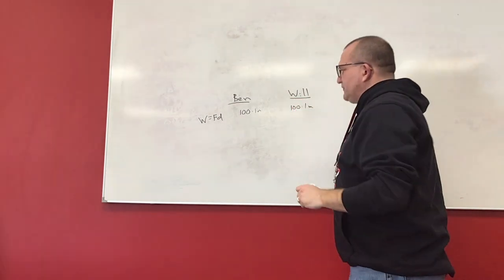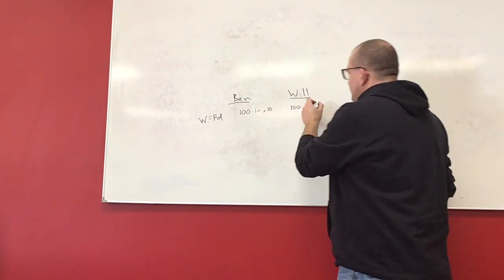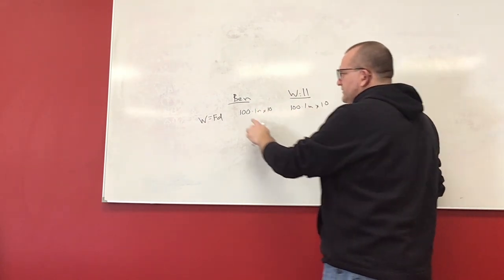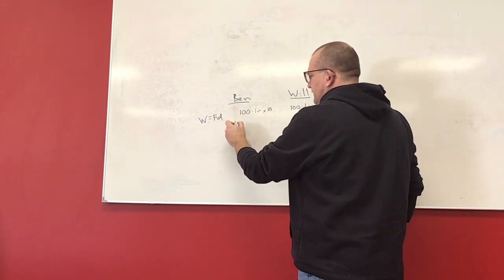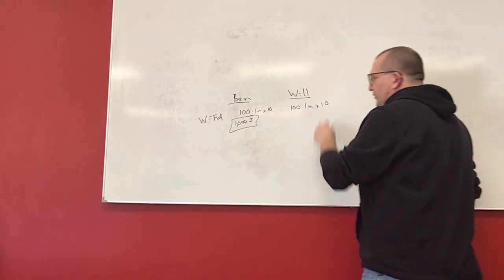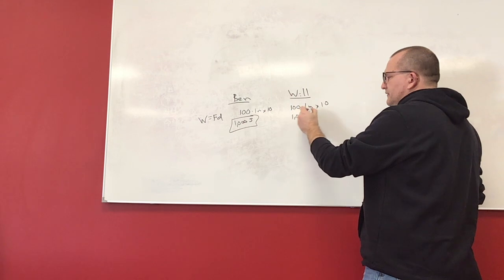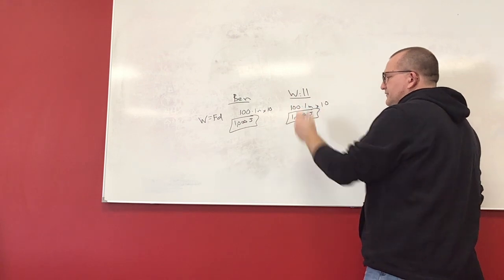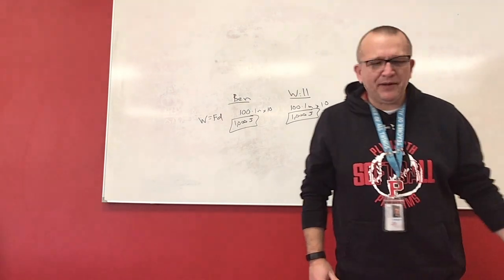He's lifting 100 pounds to one meter, but you're doing it ten times, so we're going to multiply both sides by ten. So essentially, Ben's doing 100 times one times ten, which is a thousand joules of work. Will also 100 times one times ten, a thousand joules of work.